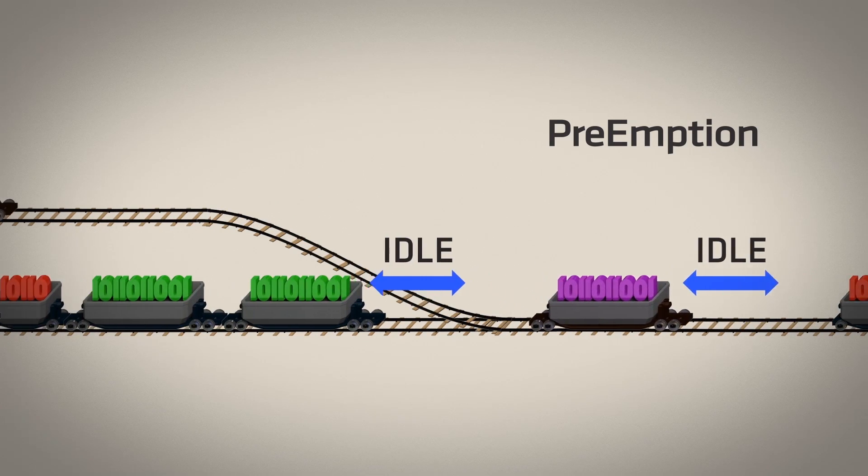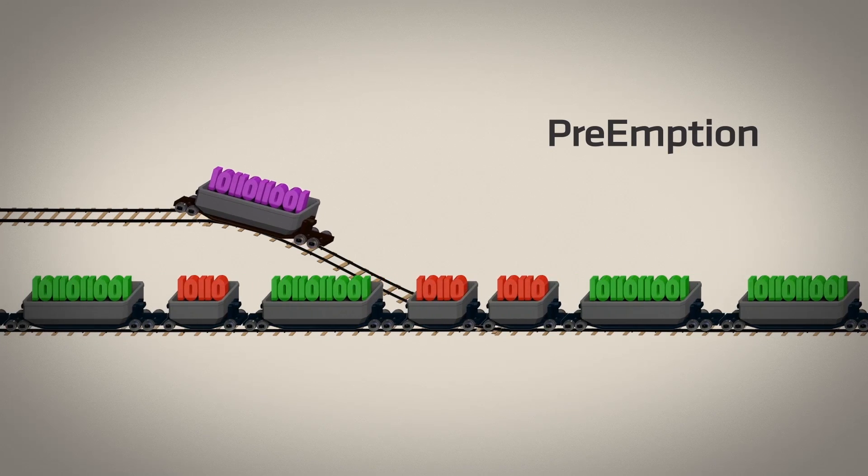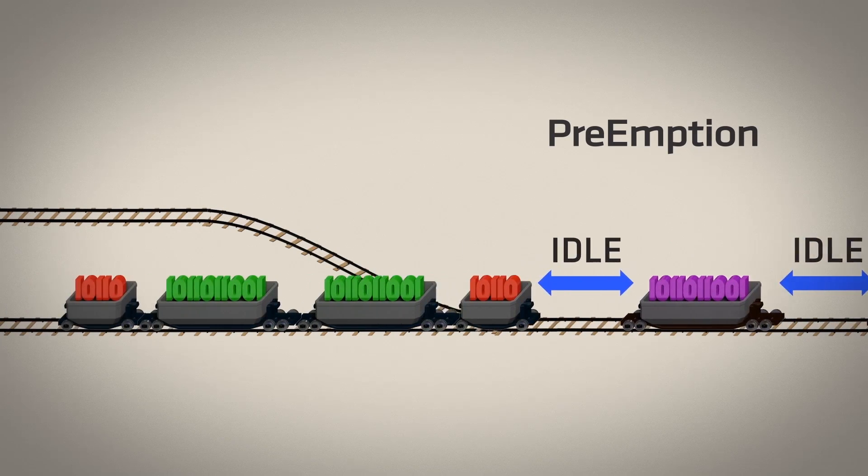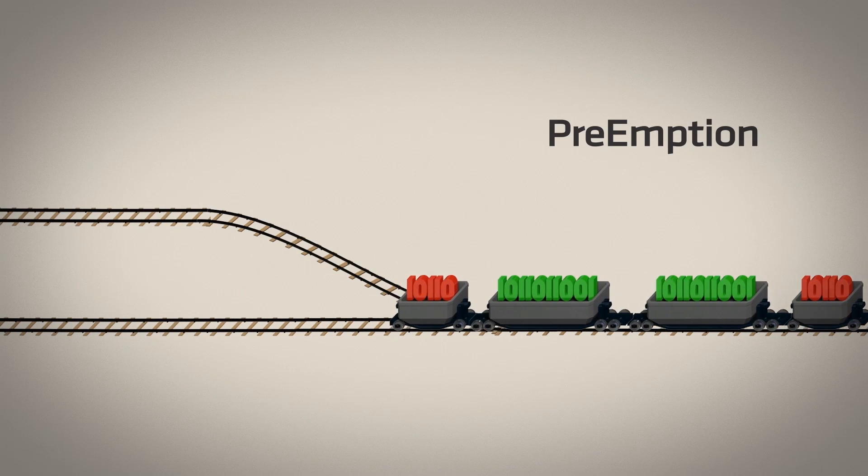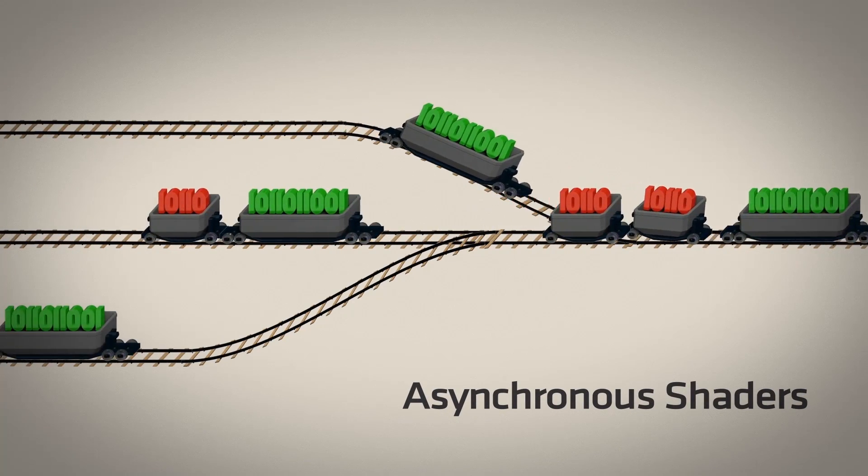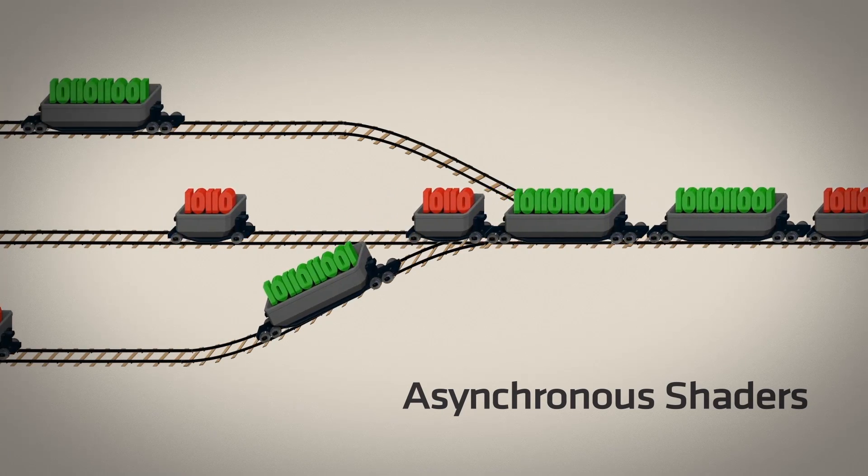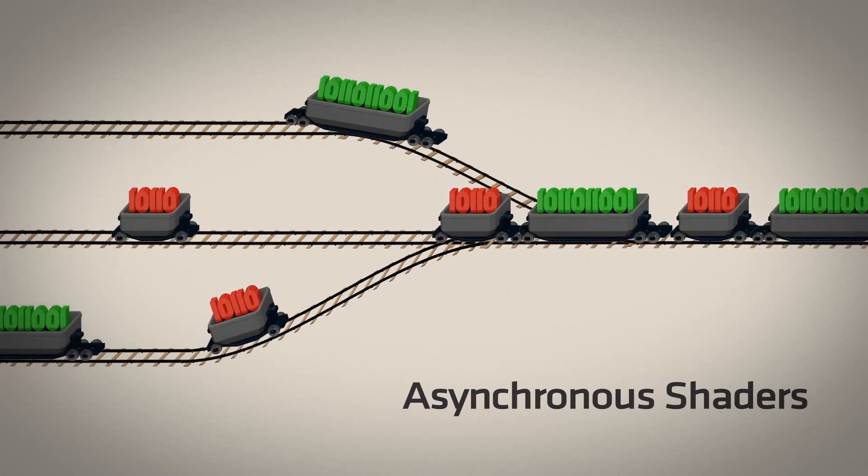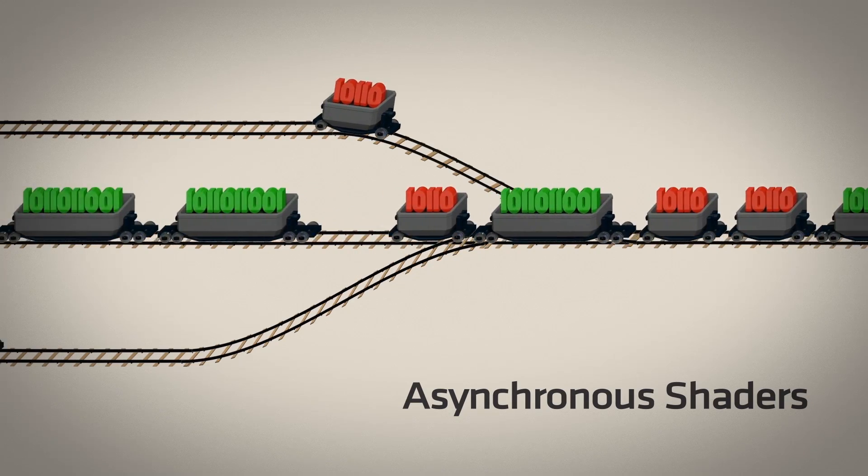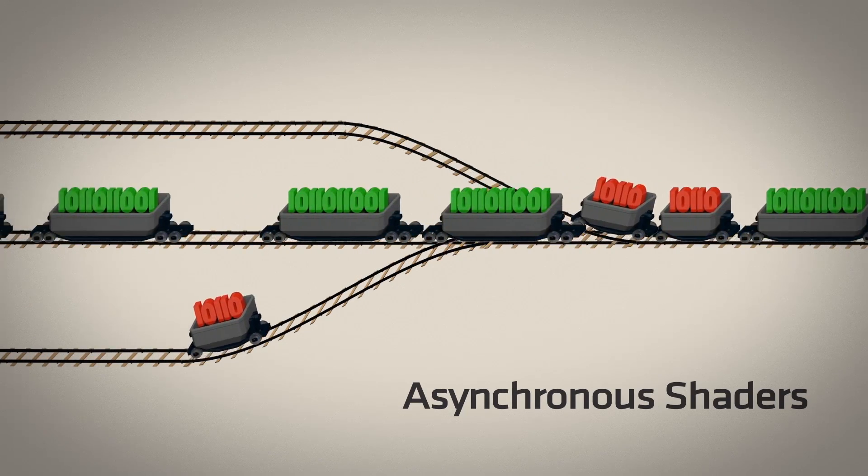However, not all preemption techniques are created equal. If performing coarse-level preemption, such as on draw and compute task boundaries, there are no real-time guarantees if a large draw or compute task has to be waited on. Asynchronous shaders provide a full solution, as they operate like a highway, eliminating traffic lights and scheduling issues, and enabling tasks from multiple sources to be submitted to the GPU and processed simultaneously.